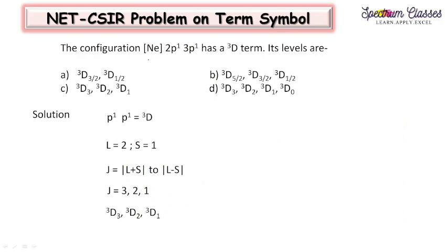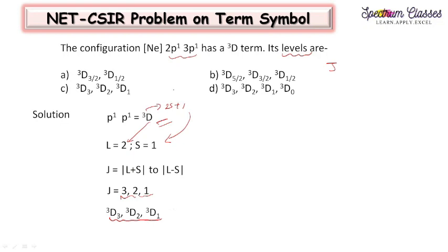For the configuration Ne 2p1, 3p1 with the 3D term, its levels are asked. For 3D: D means L = 2, and from multiplicity 3, we get 2S+1 = 3, so S = 1. J values range from L+S = 3 down to L−S = 1, differing by 1: J = 3, 2, 1. Corresponding to these three J values, there are three levels: 3D3, 3D2, and 3D1. The answer is C.